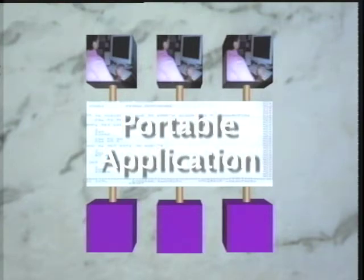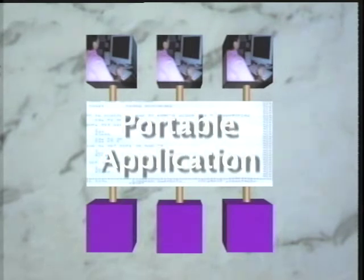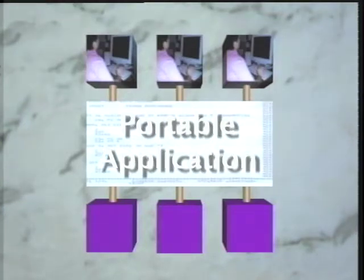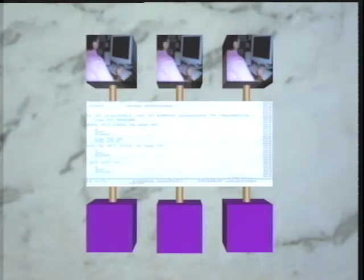Compiler switches or runtime configuration options are used to select the system and the user interface which the application is to run on. This additional work is only necessary to ensure the application is portable. This additional effort does not improve the basic features of the application — it is simply necessary to make the application work properly on the different systems.